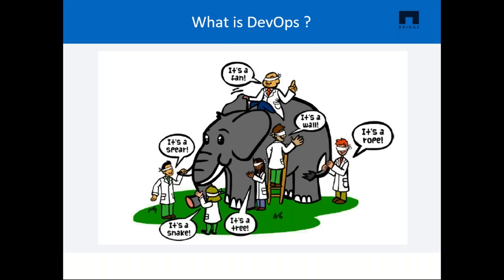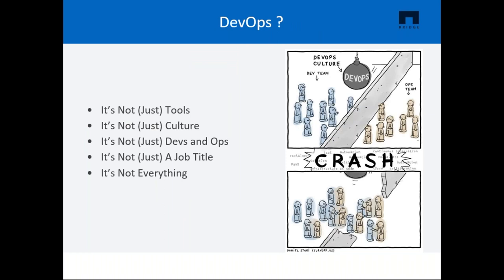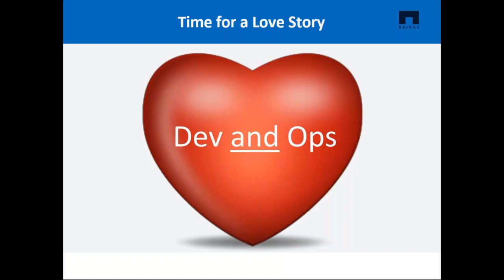I hope you've heard the story of a few blind men and an elephant. They were asked to determine what it looked like by touching different parts. The man who touched the legs said it's a pillar, the one who touched the tail said it's a rope — each had different interpretations. Similarly, when it comes to DevOps, some say it's just a job title, for some it's all about automation, for others it's collaboration between development and operations, and for some it means faster and smaller releases. So what does DevOps really mean? It's not just tools, not just culture, not just dev and ops, not just a job title.